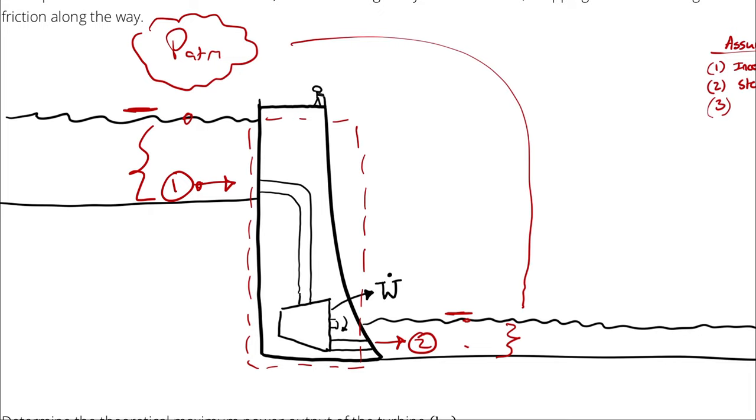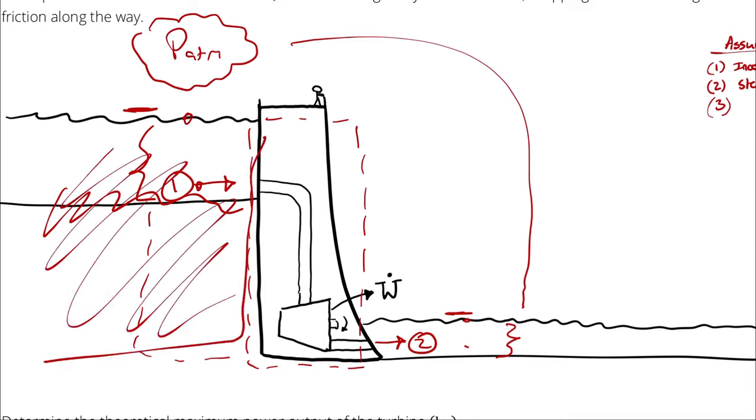and we had like a big old reservoir of water that filled this entire space, and there was a pipe here. It's still a pressure difference between one and two. It's just that we've defined our inlet up here as opposed to right here. Does that logic make sense?